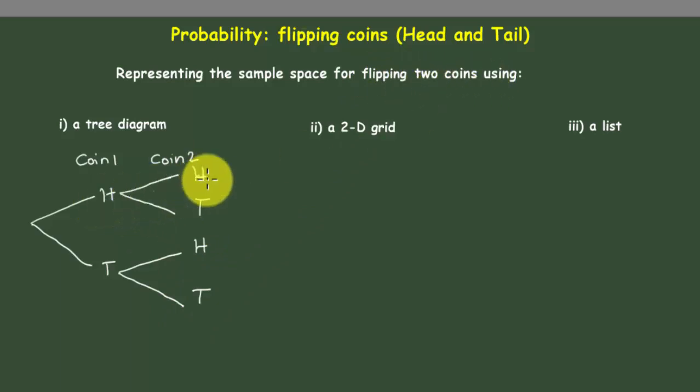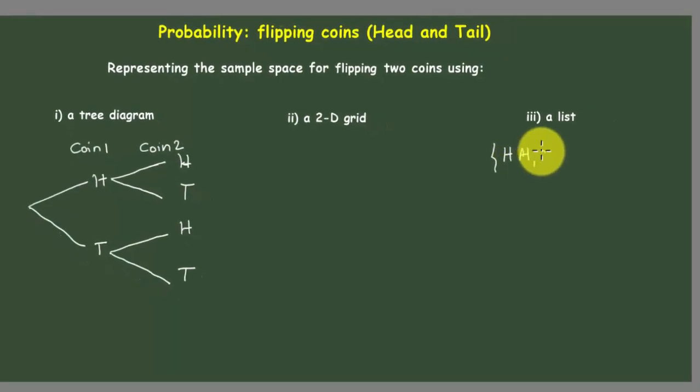This brings us directly to the list, which can be written like this: we got head-head, head-tail, tail-head, and tail-tail. These are our possibilities written in the list.